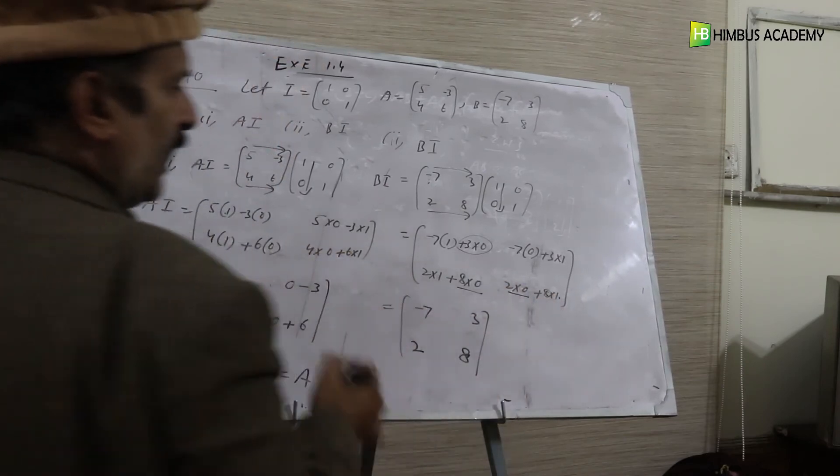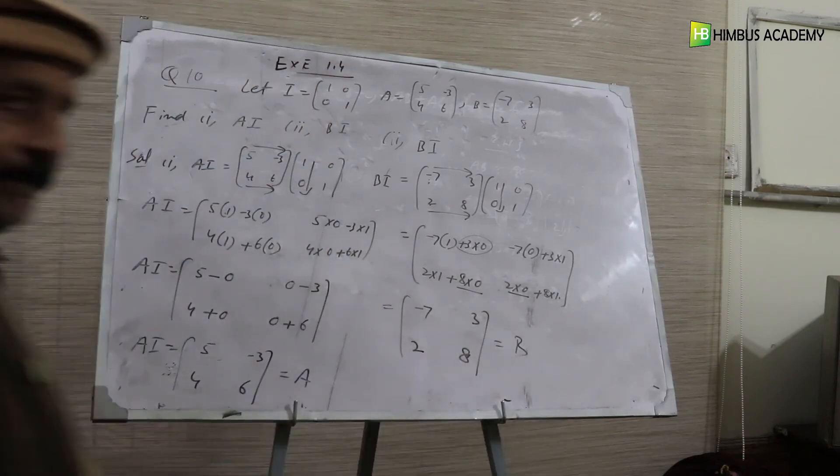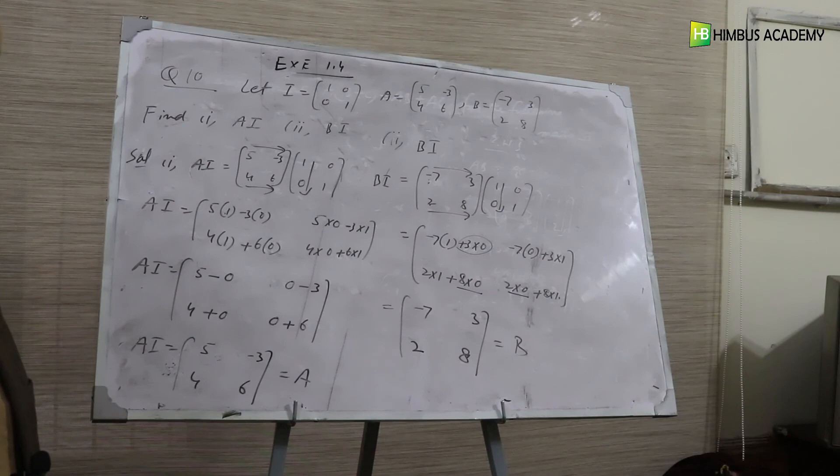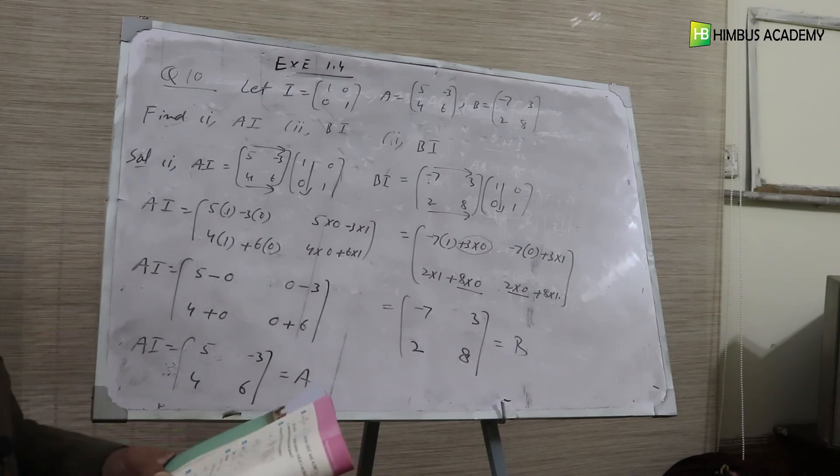You can see this also gives us the original matrix B. The conclusion we draw from this is that if we multiply the identity matrix with any matrix, we get the same matrix. This is all about question number 10.